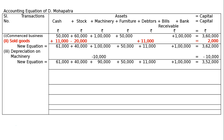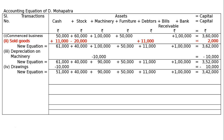Transaction 4: Cash withdrawn for personal use — this is drawings. It will be deducted from cash as well as capital: rupees 10,000 from cash and rupees 10,000 from capital.